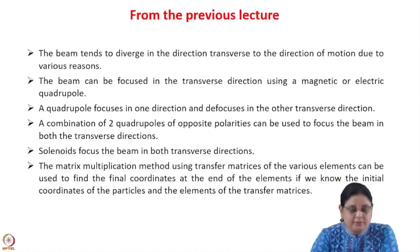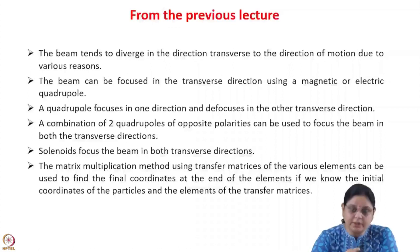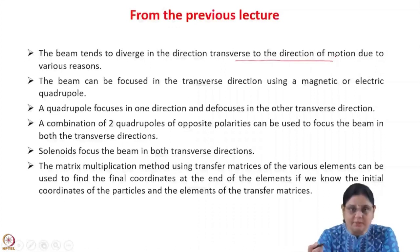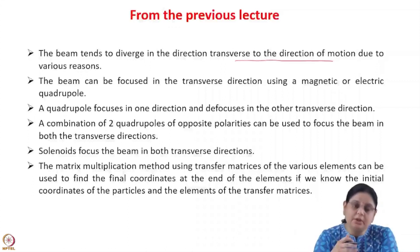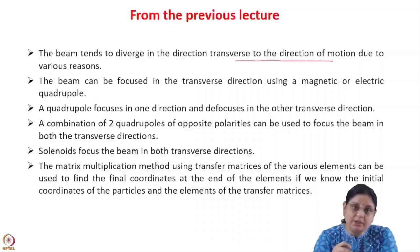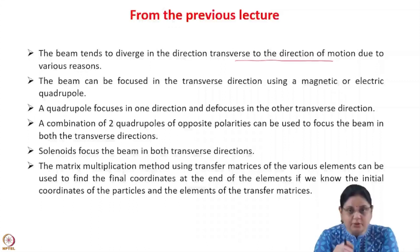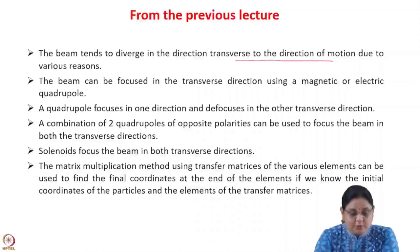In the last lecture we learned about the transverse dynamics. The beam in general tends to diverge in the direction transverse to the direction of motion due to various reasons: it could be due to the inherent divergence of the beam, it could be due to the defocusing RF forces, or it could also be due to space charge effects, which is the Coulombic repulsion due to the same-charge particles in the beam. Due to these reasons the beam tends to diverge in the transverse direction and has to be focused and brought back to the axis.